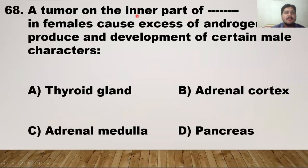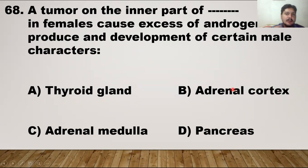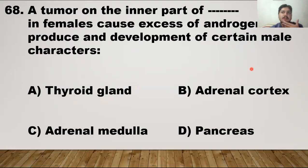A tumour on the inner part of which structure in females causes excess androgen production, leading to development of male characters such as beard growth? The right answer is the adrenal cortex — the outermost part of the adrenal gland. When infected by a tumour, it may develop male sexual characters in females.